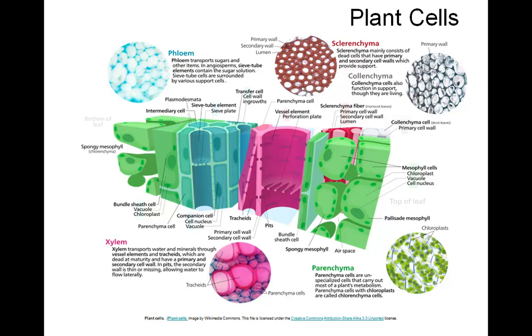Parenchyma cells are unspecialized cells that carry out most of a plant's metabolism. Parenchyma cells are alive at maturity and have thin primary cell walls.